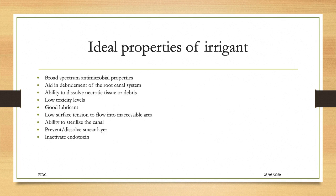Ideal properties of an irrigant: it should have broad spectrum antimicrobial properties; aid in debridement of the root canal system; ability to dissolve necrotic tissue or debris; low toxicity levels; good lubricant; low surface tension to flow into inaccessible areas of the root canal; ability to sterilize the canal; and prevent or dissolve the smear layer and inactivate endotoxins.